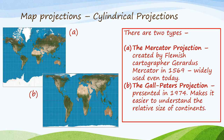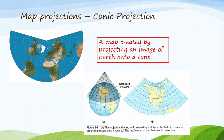The Gall-Peters projection shows us that relative to other countries, Africa is actually very large. Similarly, Australia is quite a large country — it doesn't look that large on the Mercator projection, but on the Gall-Peters it shows its relative size compared to Indonesia and New Zealand. A third type of projection is called the conic projection, which is a map created by projecting an image of the earth onto a cone.